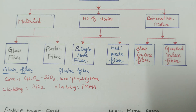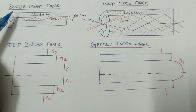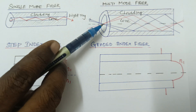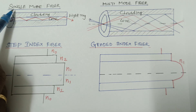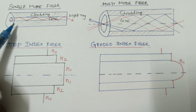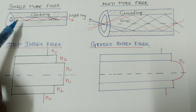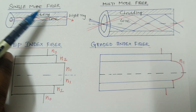PMMA stands for polymethylmethacrylate. The name itself shows the properties of this material. Moving to classification based on number of modes — single mode fiber is nothing but only one mode propagated through the fiber, which is called single mode fiber.